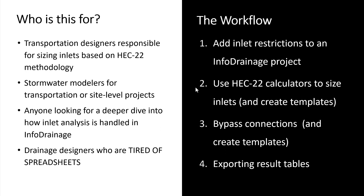The workflow we'll cover today: we will first add some inlet restrictions to an Info Drainage project. We will use HEC-22 calculators to size that inlet and create a template based on that inlet that corresponds to a DOT inlet type. Then we'll demonstrate how to set up bypass connections, create a template for a standard roadway gutter cross section, and talk about a couple different ways to export those inlet sizing calculations to tables for use in stormwater reports.